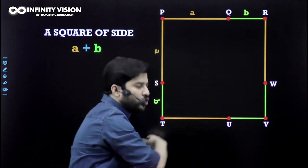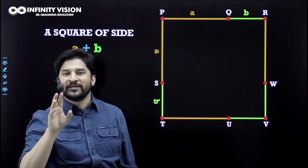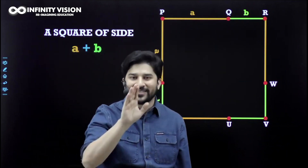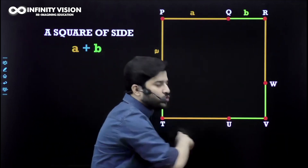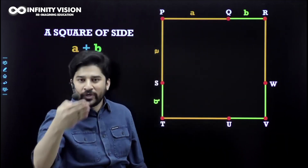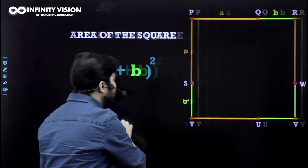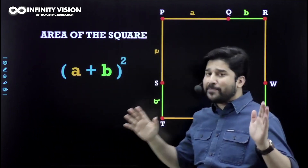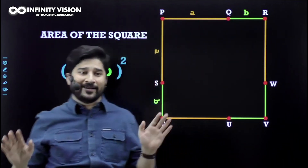You have got a square whose side is a plus b. The area of a square is side times side, so the area is a plus b into a plus b, which is a plus b whole square. So a plus b whole square is simply the area of this complete square.